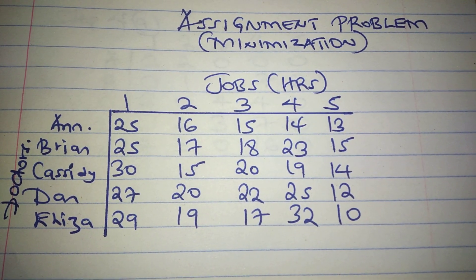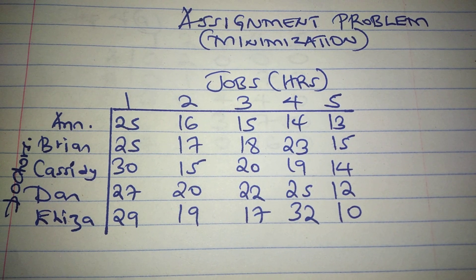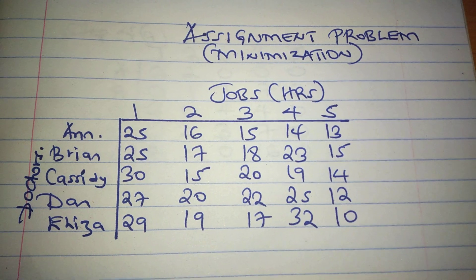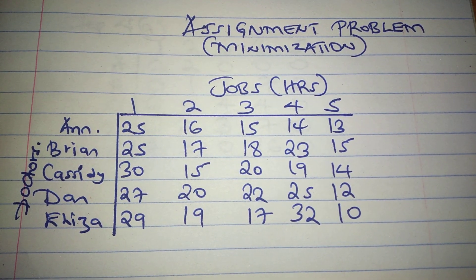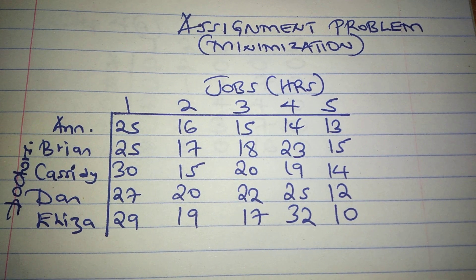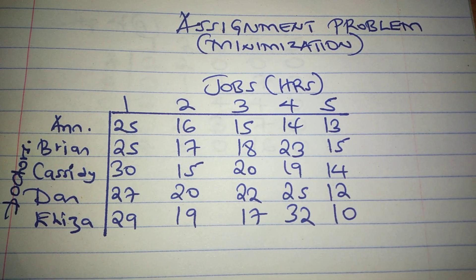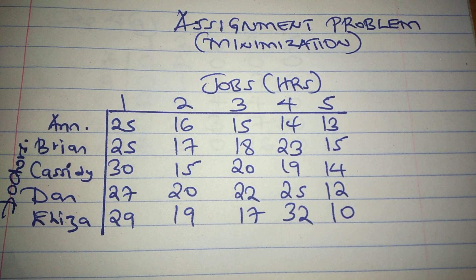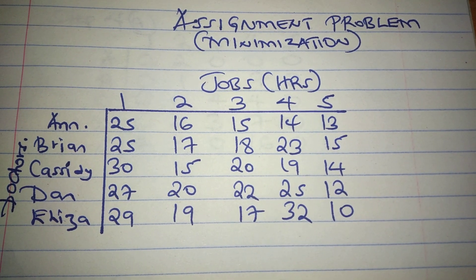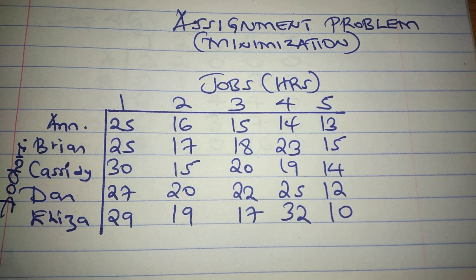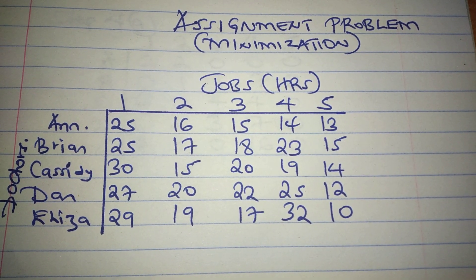This is a minimization problem. In this question, we have five doctors — Ann, Brian, Cassidy, Dan, and Eliza — who are supposed to be assigned five jobs: one, two, three, four, and five. Each of these doctors has a different amount of time to do each job. The question is: how do we assign the doctors to the jobs in order to minimize the time taken using the Hungarian method?